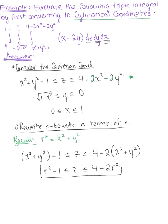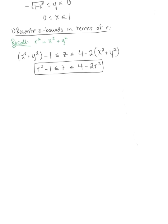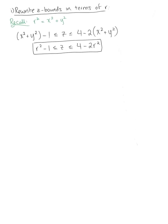These will be the bounds for z in cylindrical coordinates. At this point, we want to use the x and y bounds to sketch a graph of this two-dimensional region.